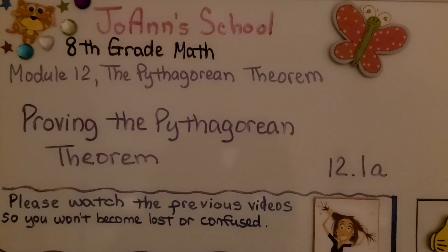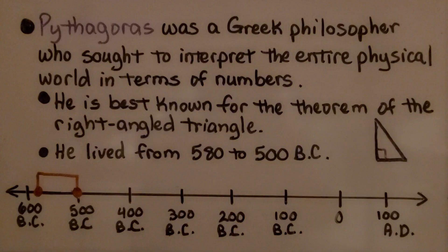Lesson 12.1a Proving the Pythagorean Theorem. Pythagoras was a Greek philosopher who sought to interpret the entire physical world in terms of numbers. He's best known for the theorem of the right-angled triangle.